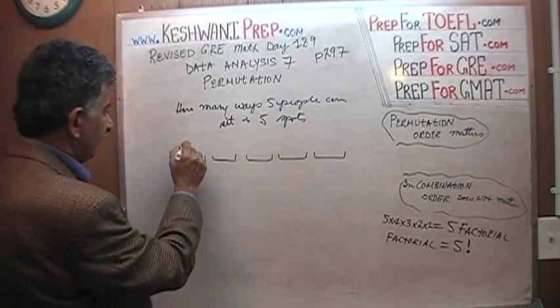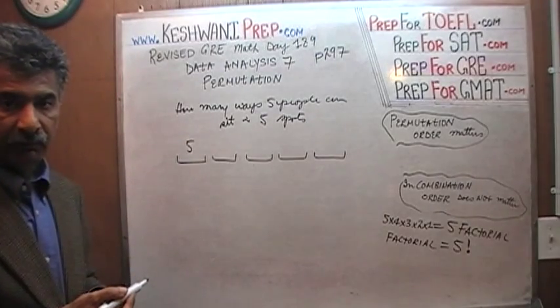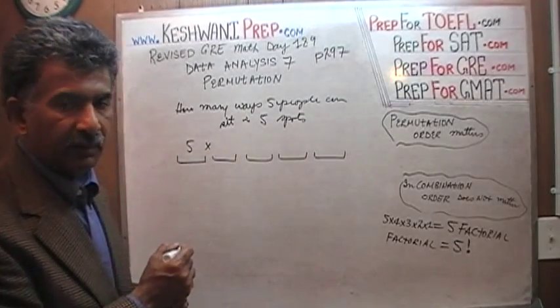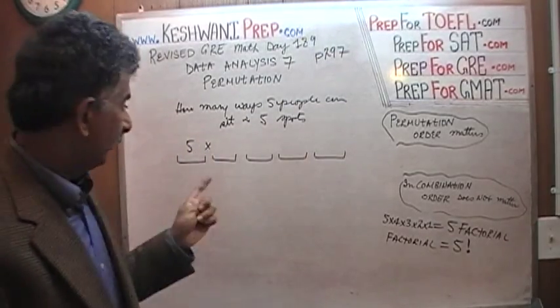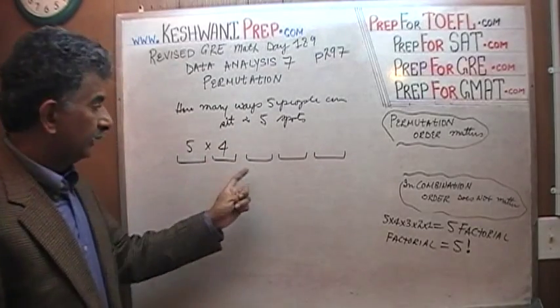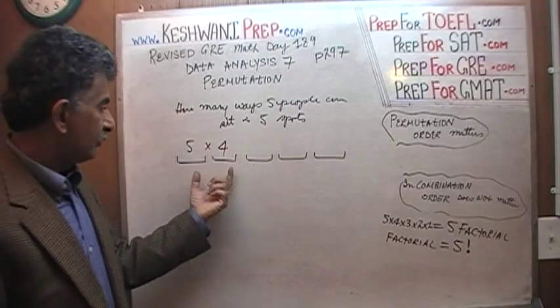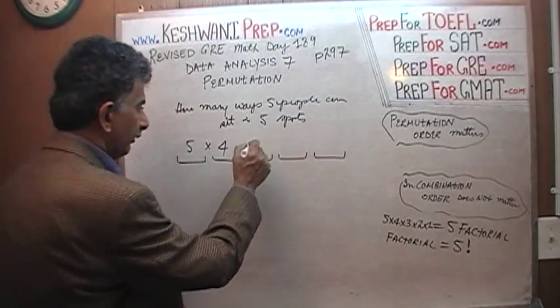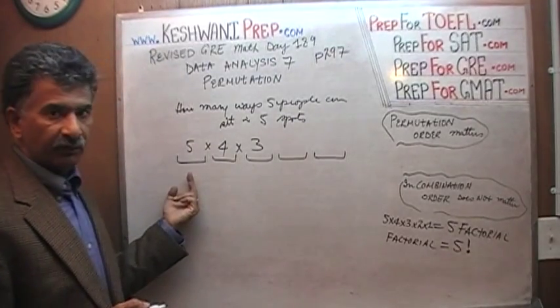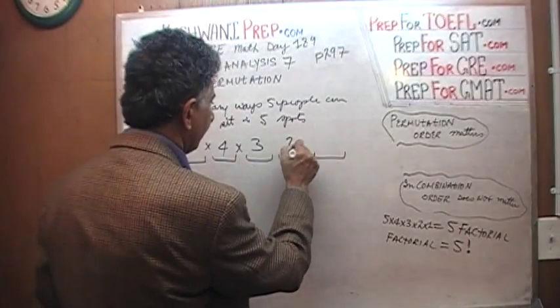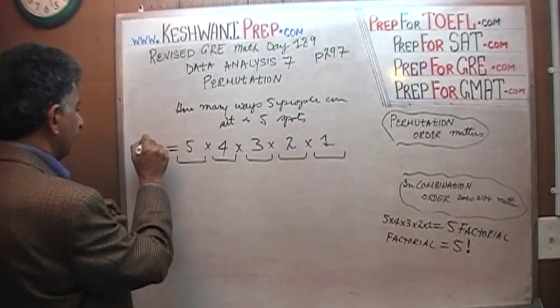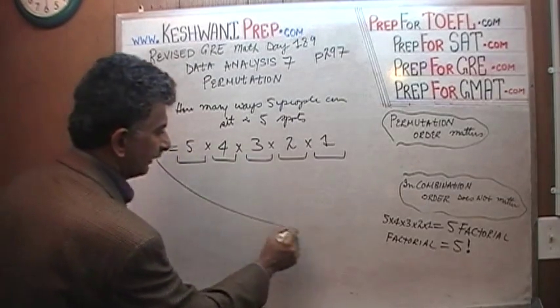In the first spot, we have five choices because there are five people. After we have chosen the first guy, we only have four left. We have four choices for the second spot. For the third spot, once we have chosen two people, there are only three people left. We have three choices for the spot. After the three people have been chosen out of five, we have only two choices for this spot. And finally, whoever is left will go in the spot. This is what is known as five factorial, which is what we learned yesterday.